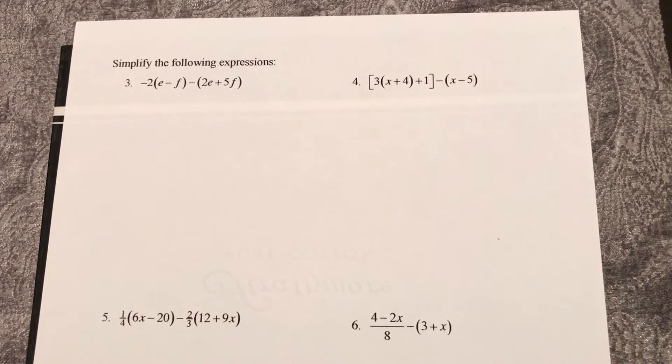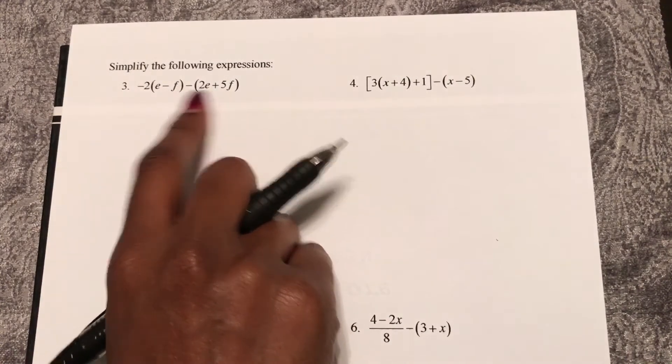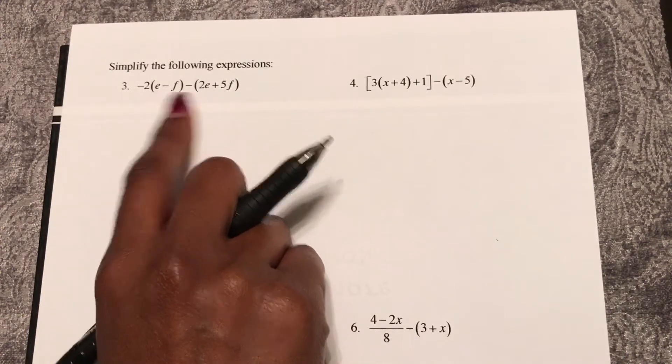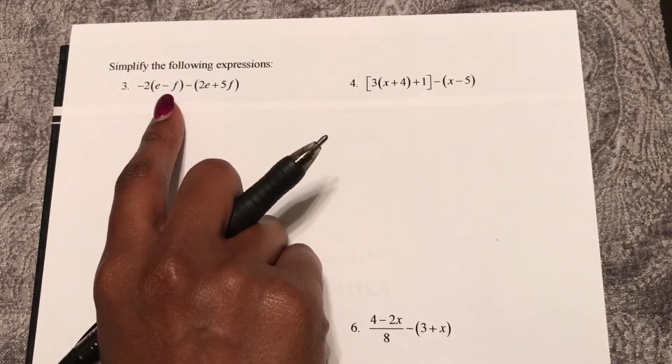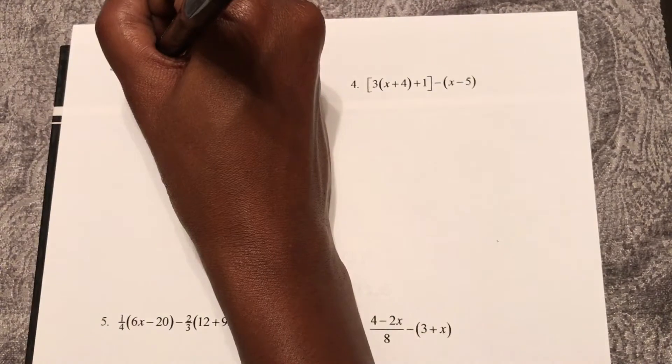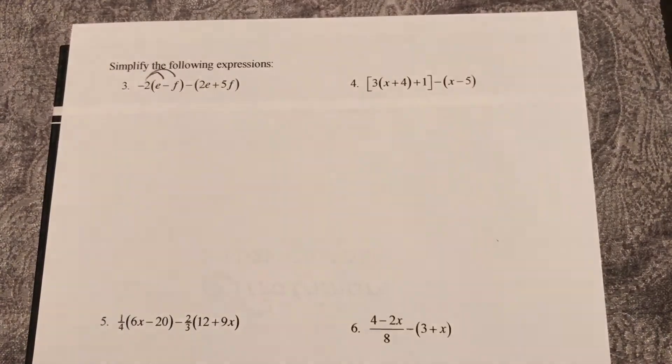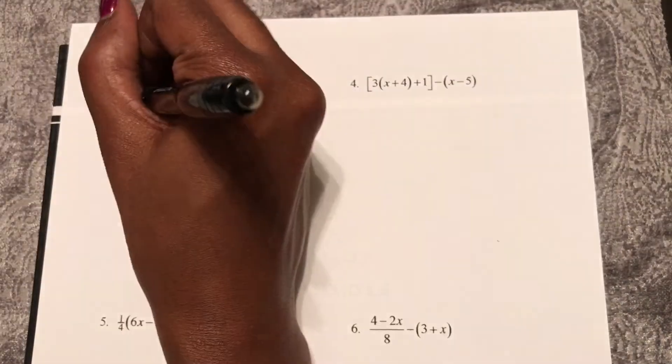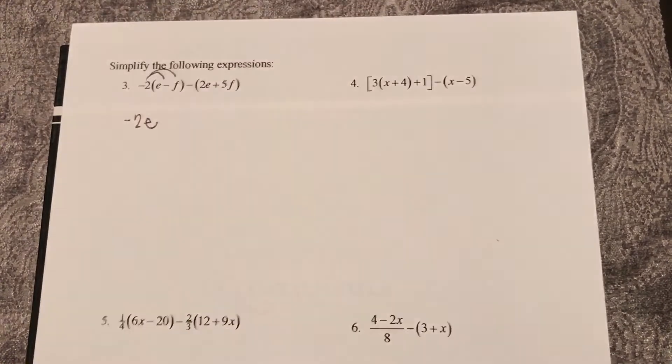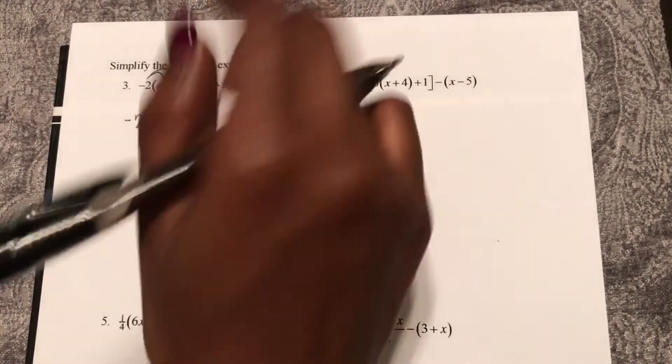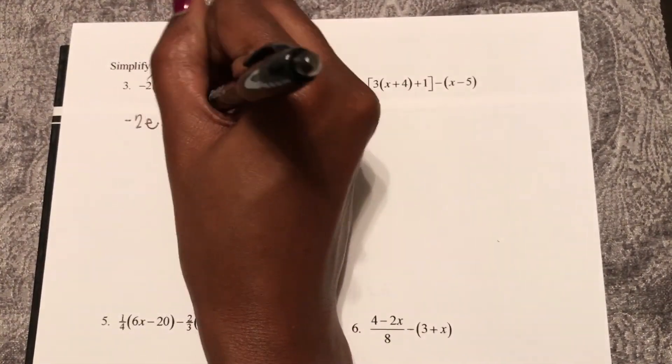So if I look at the first term, or the first part of this expression, I see these parentheses, and I want to get rid of them first by distributing the term in front. So negative 2 multiplied by e is negative 2e. Negative 2 multiplied by negative f is positive 2f.